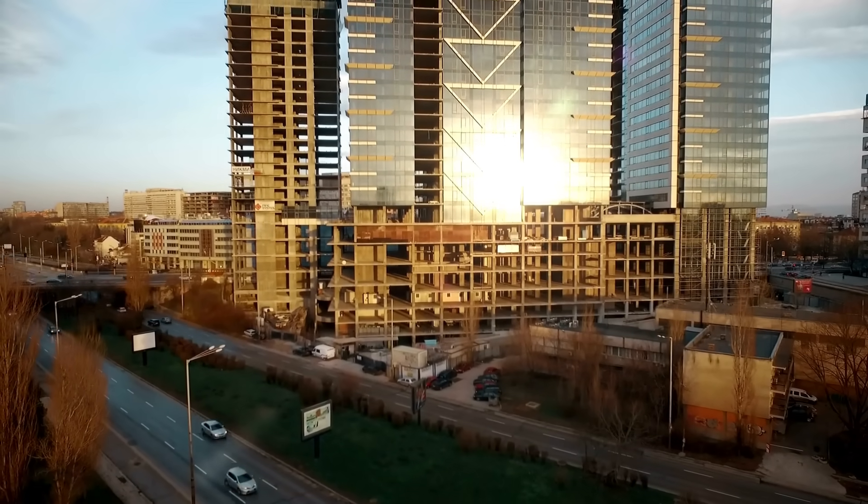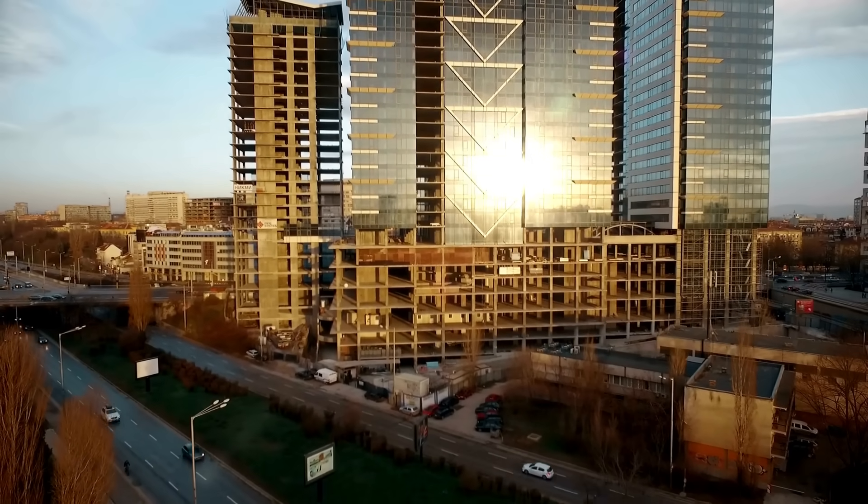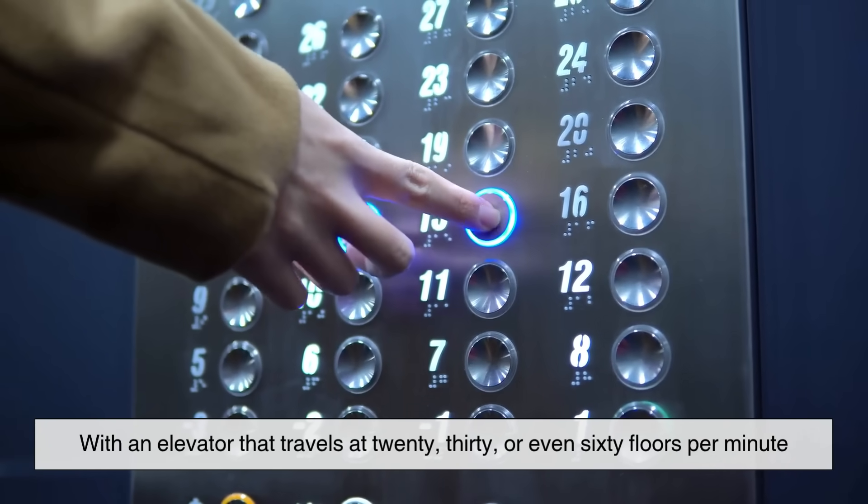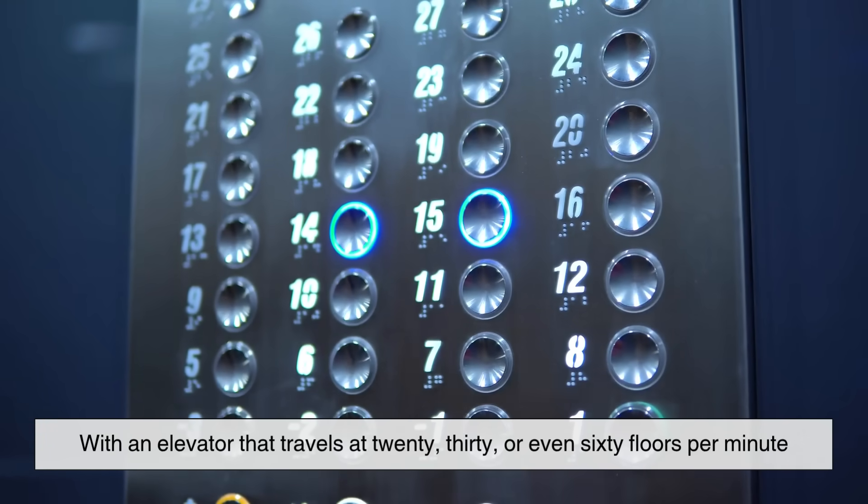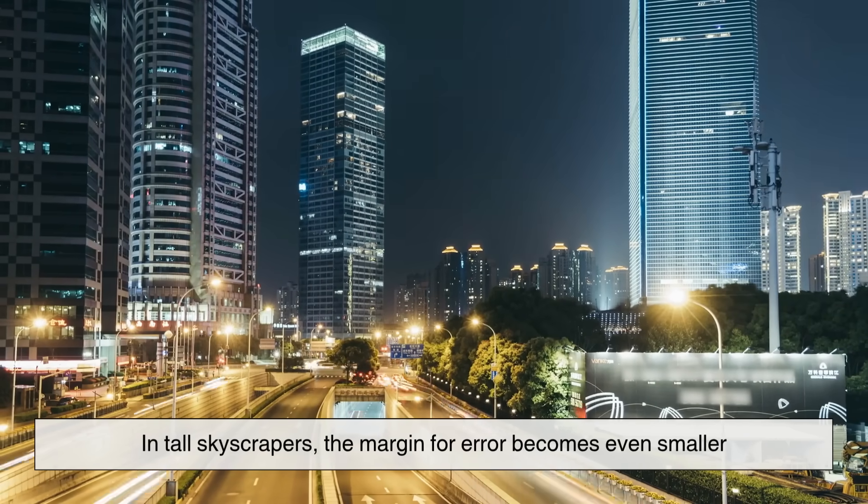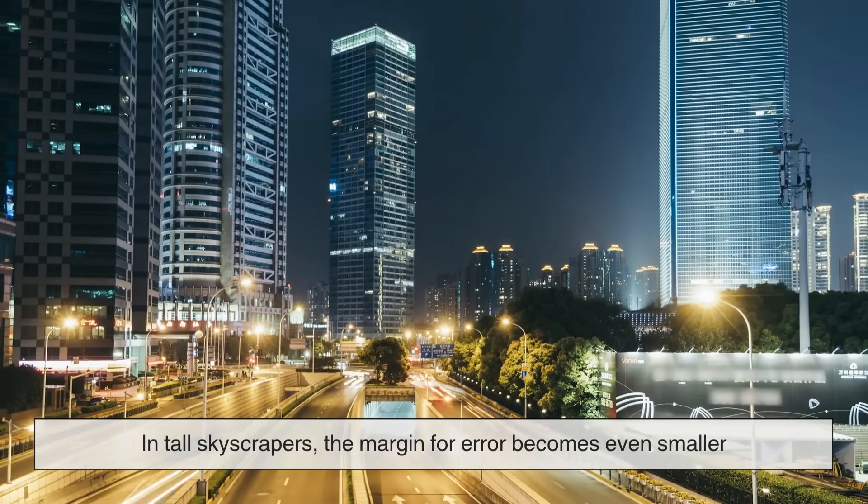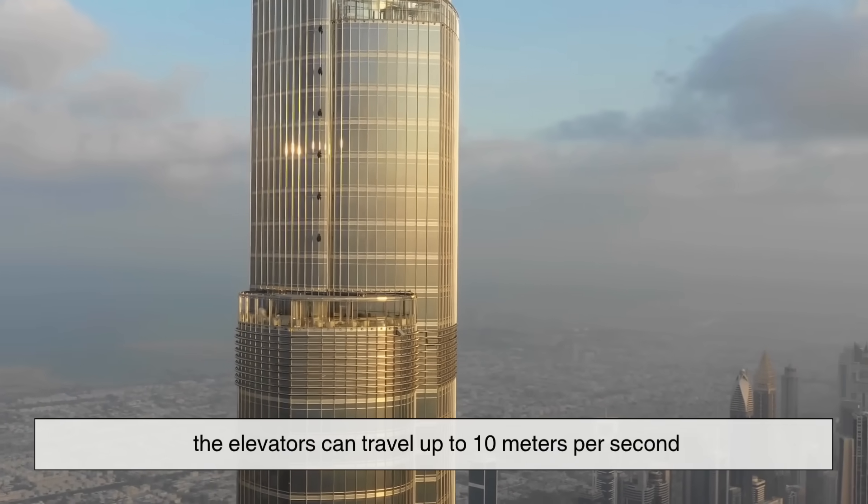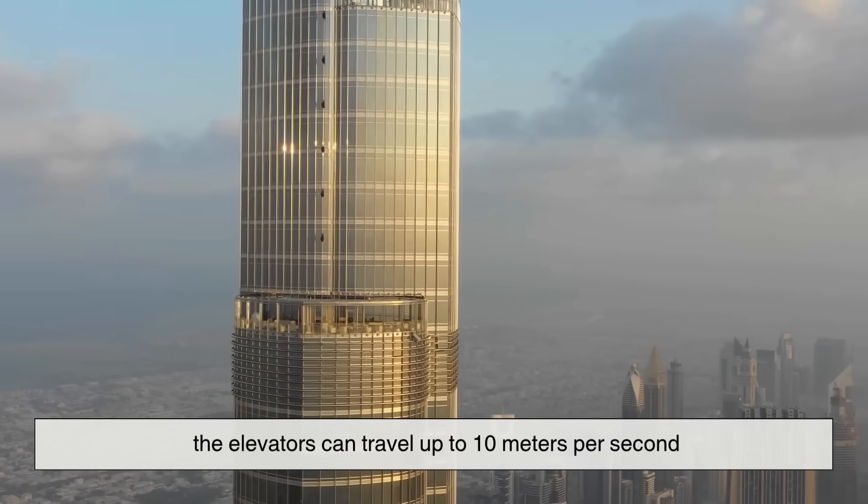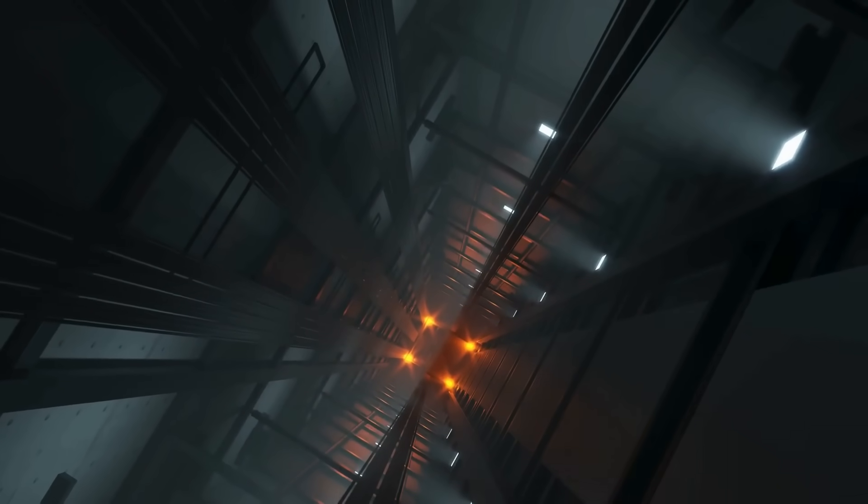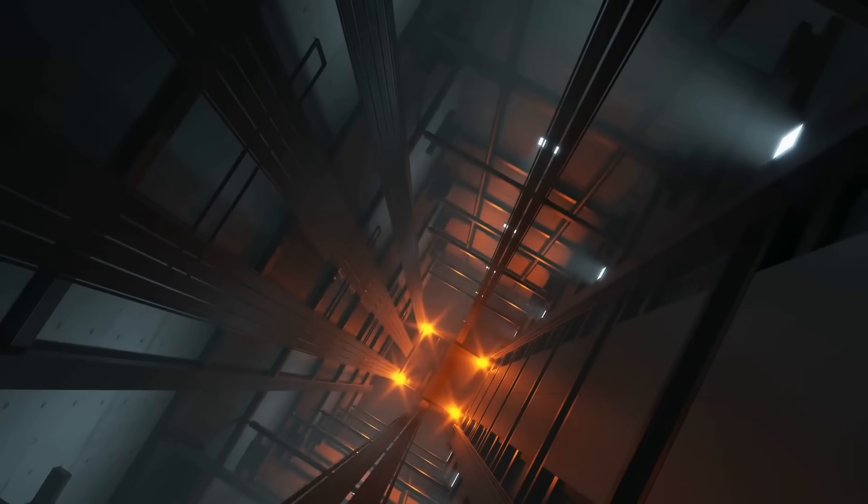Now, imagine this level of precision but in a high-rise building, with an elevator that travels at 20, 30, or even 60 floors per minute. In tall skyscrapers, the margin for error becomes even smaller. For instance, in the Burj Khalifa, the elevators can travel up to 10 meters per second. So even a millimeter of misalignment at those speeds requires constant real-time correction.